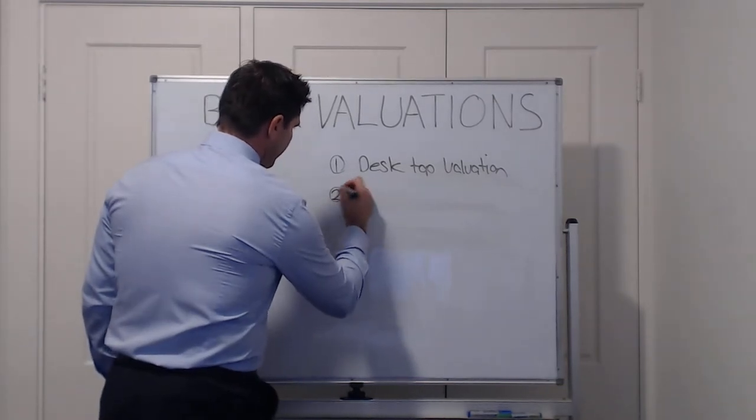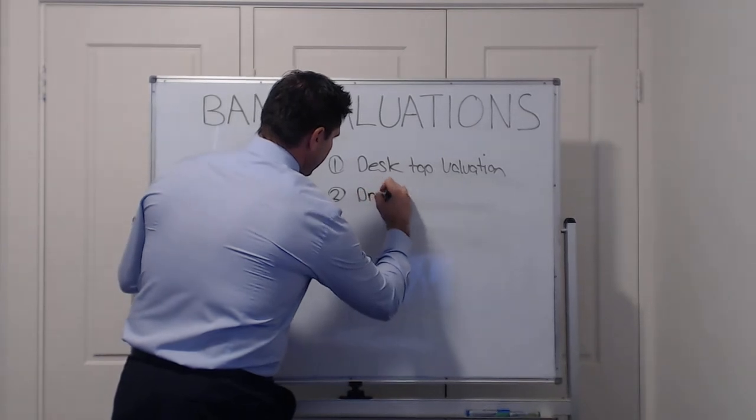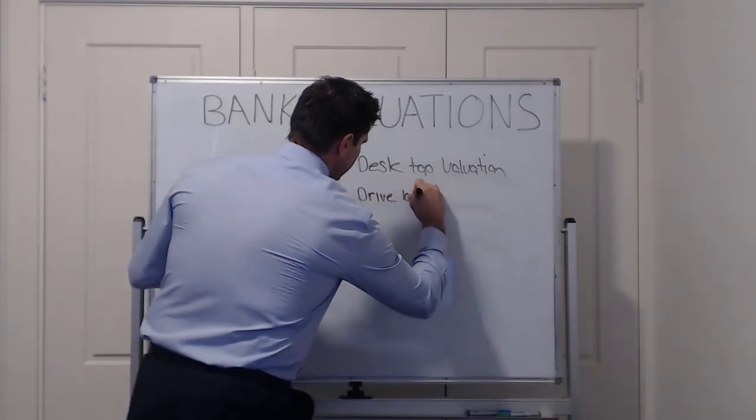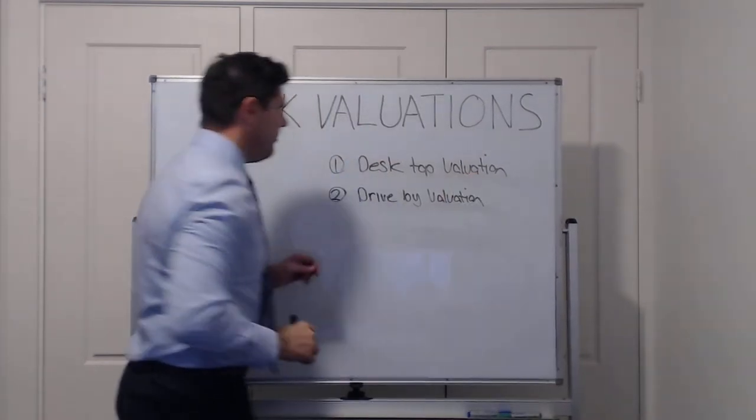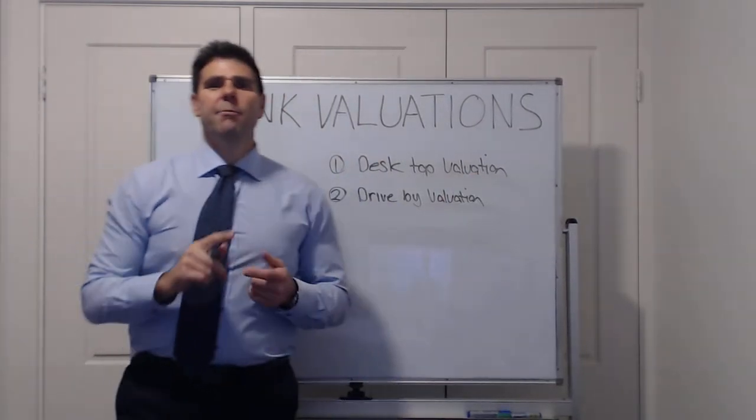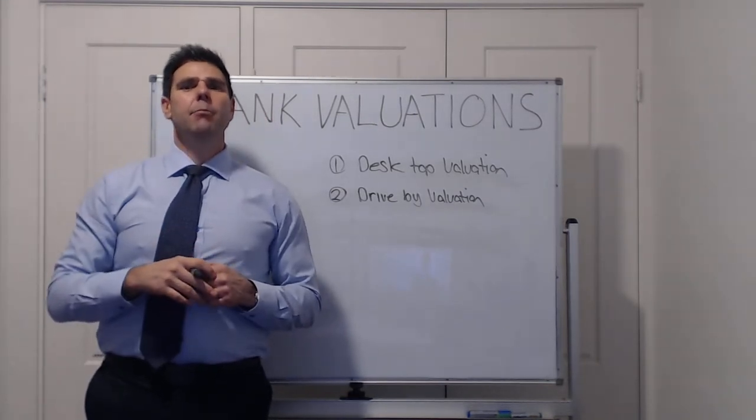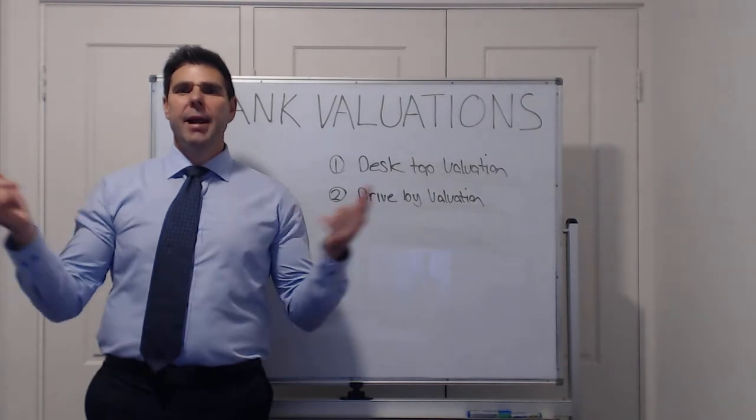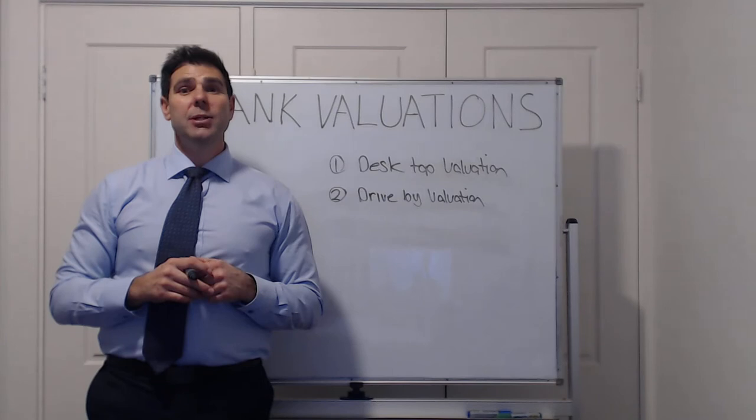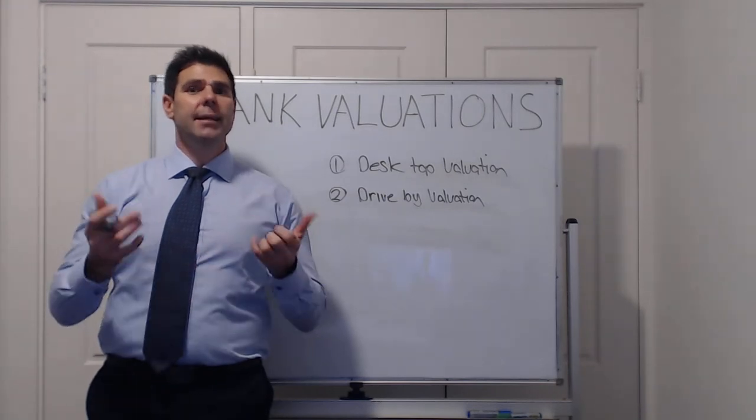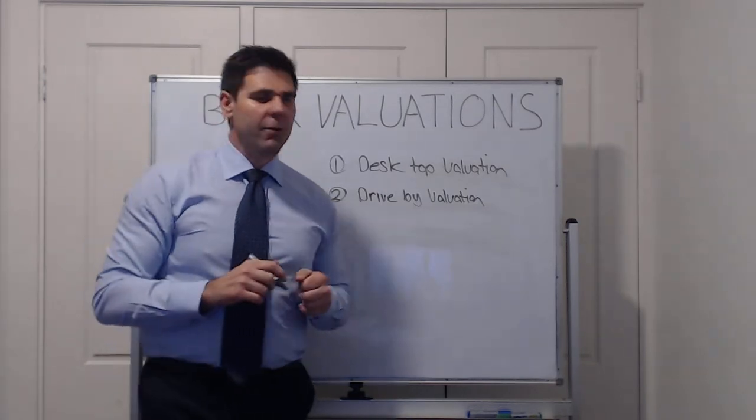The other type, or one of the other types, is what we call a drive-by valuation. This is where the bank valuer will jump in the car, drive past your property, take some photos of the property, have a look at the surrounding suburb, the area, take the information back to his or her office, and conduct the report, send the report back to the bank. That determines your valuation.